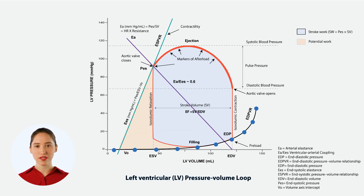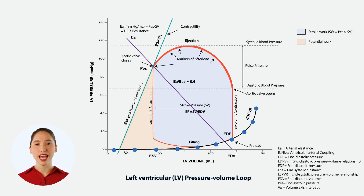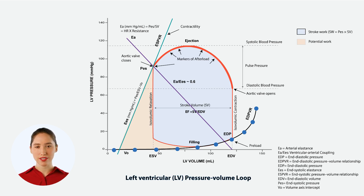Understanding this curve is crucial for diagnosing and managing heart conditions. It allows us to evaluate how well the heart can handle different volumes of blood and to assess the stiffness or elastance of the heart muscle. When we say end diastolic dysfunction of the heart, it means that the heart is at the steeper part of the curve.